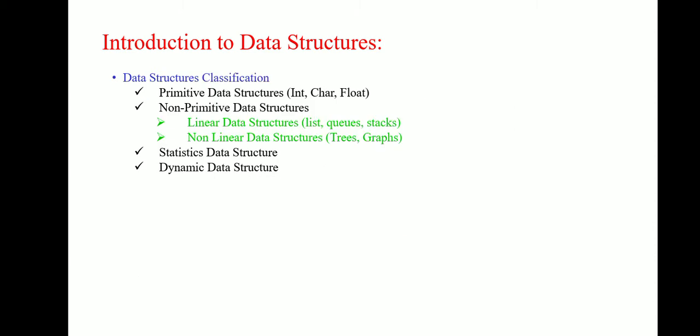Now here, if we consider the data structure, there are few types of data structure which is called as primitive data structure and non-primitive data structure. Primitive data structure which consists of integer, character, float. Non-primitive data structure consists of linear data structure and non-linear data structure. Linear data structures are list, queues and stacks. Where non-linear data structures are trees and graphs.